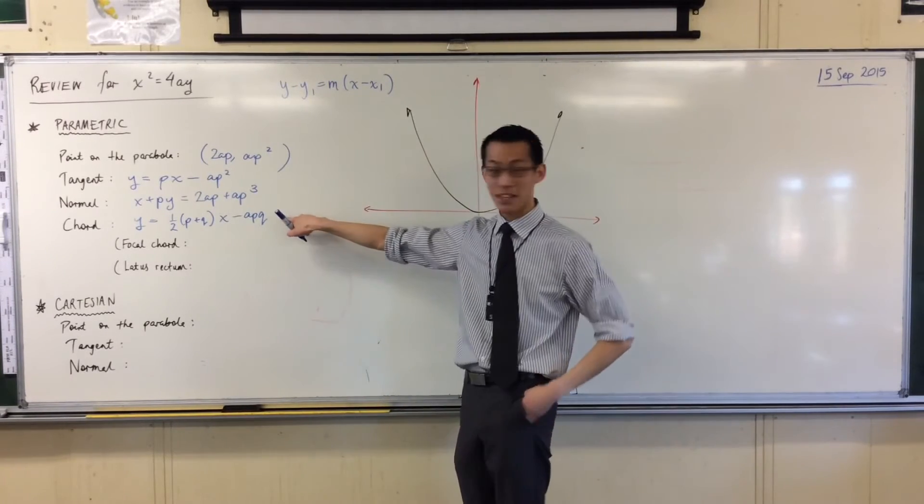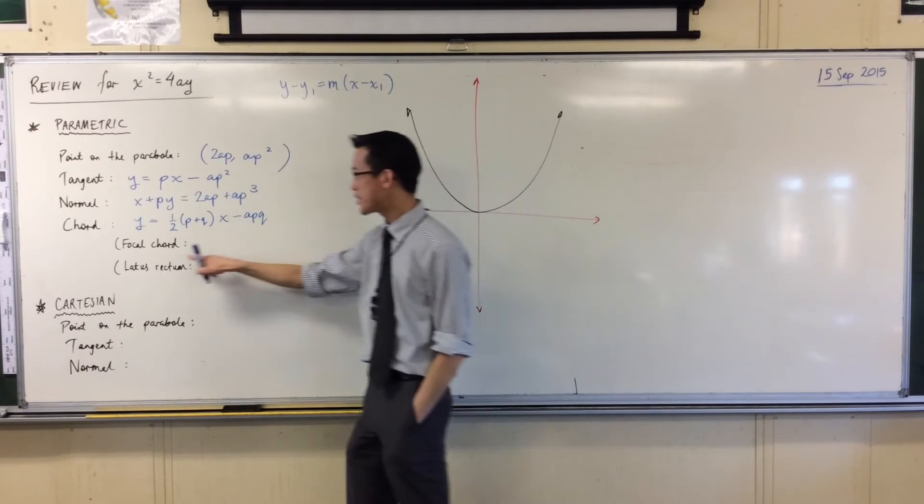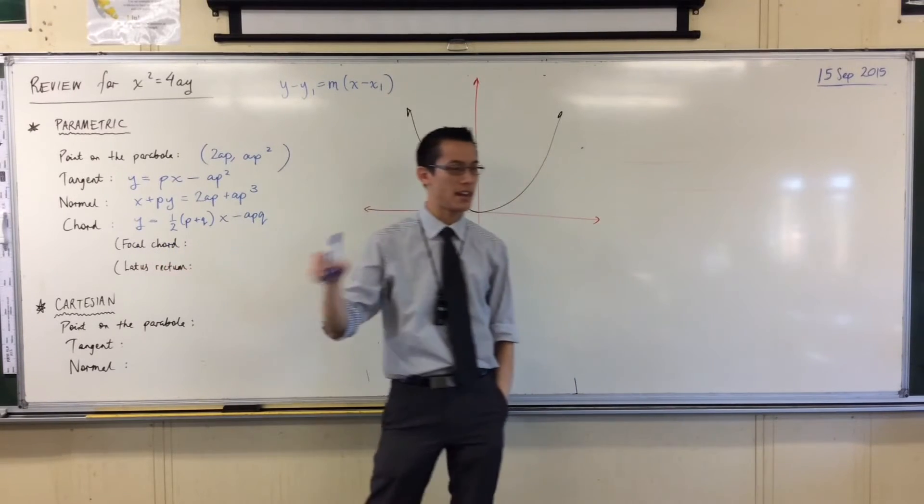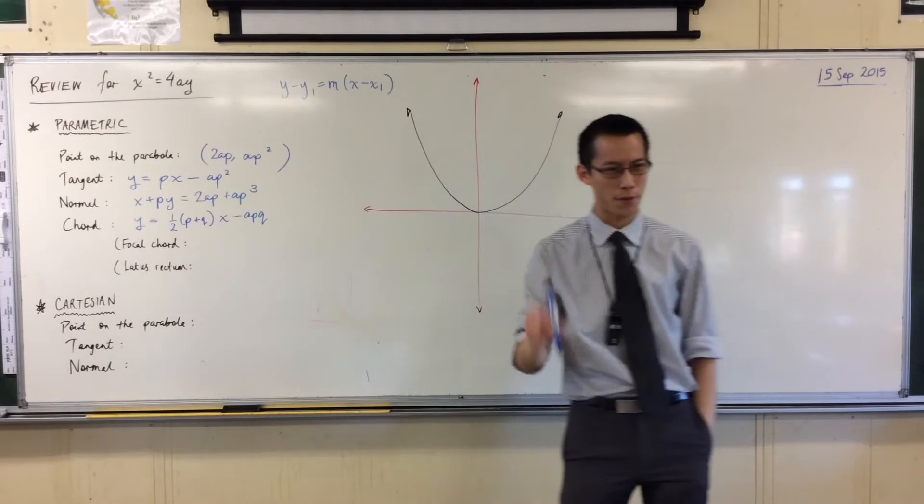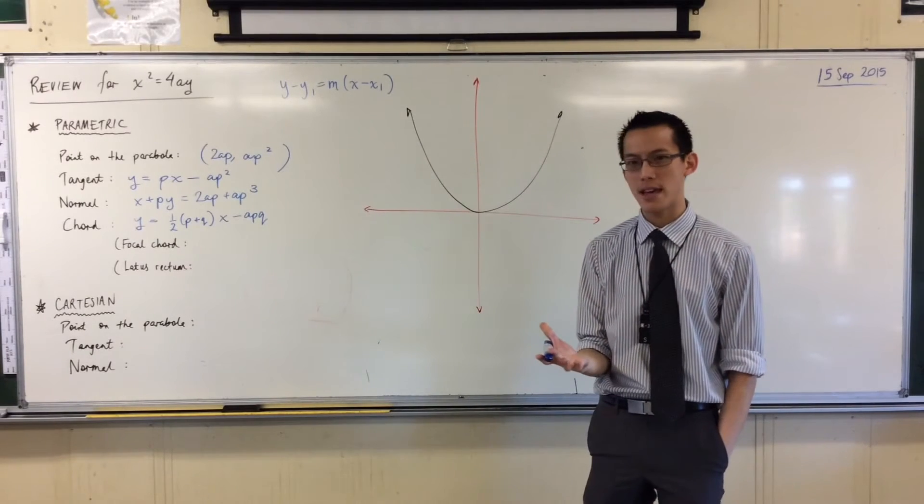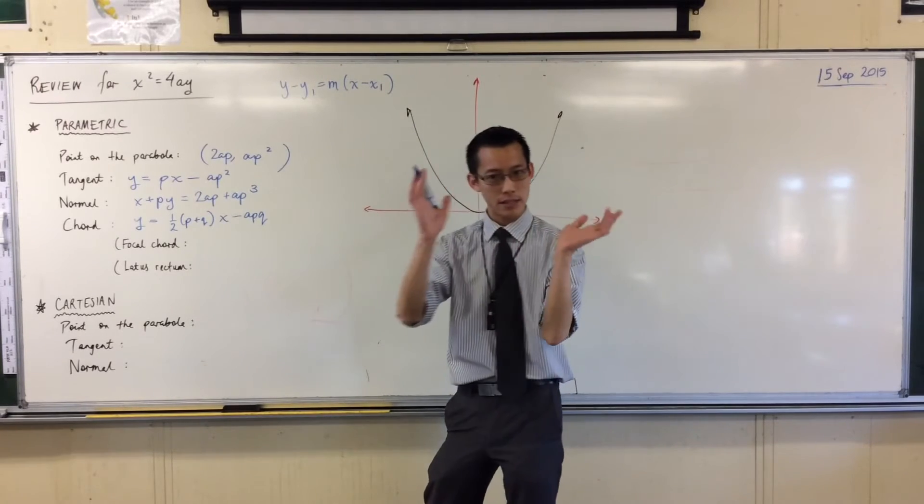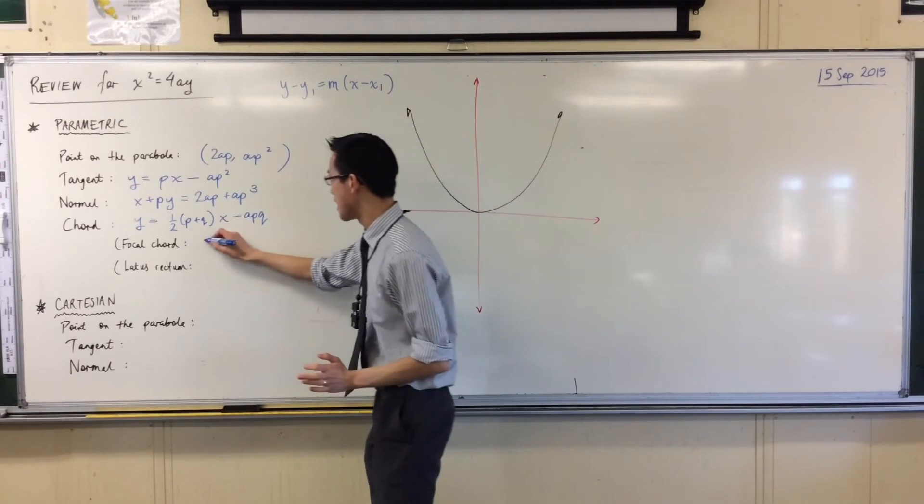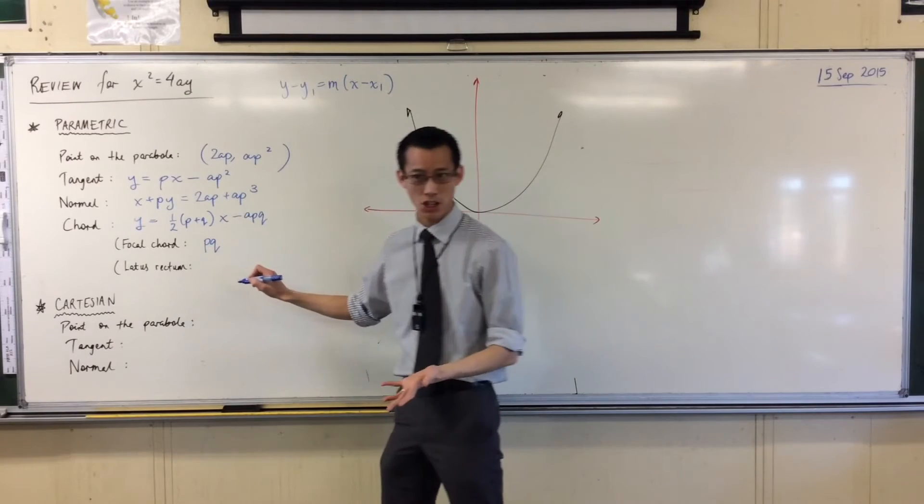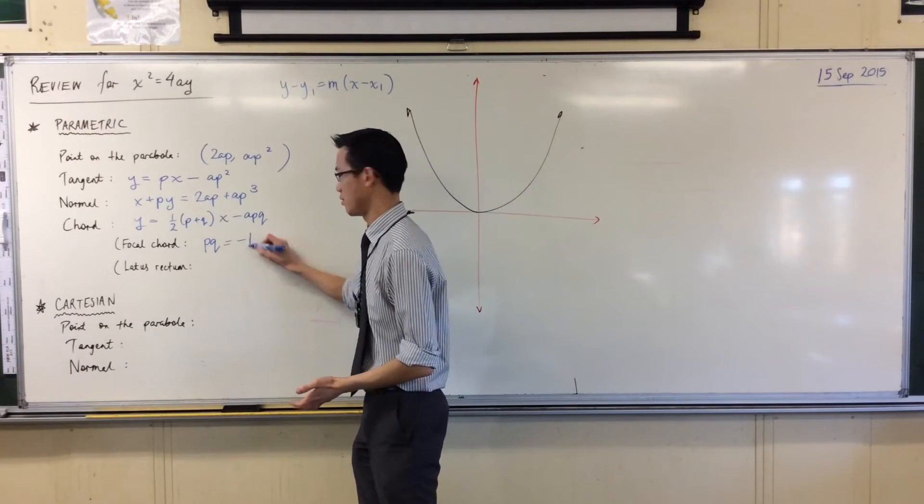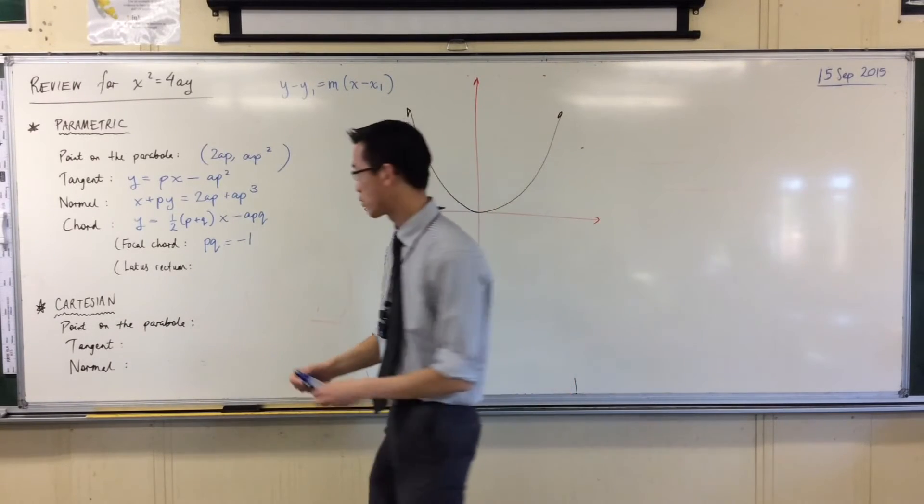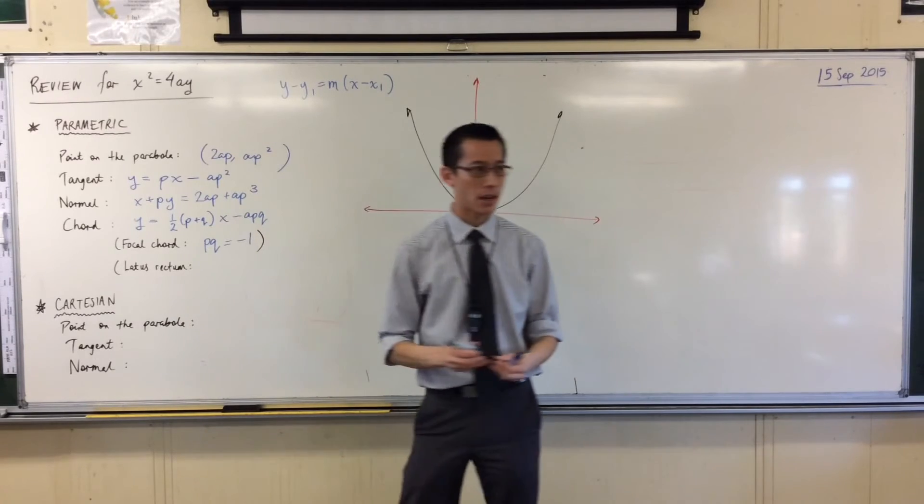All right, let's keep going. There's a couple of things I wanted to note about the chord. If it's a focal chord, if the chord passes through the focus, what do we know about p and q? They have a special relationship. That's right, those tangents are going to be perpendicular, which means that their gradients, p and q, they multiply to negative one. If it's a focal chord, that is true.